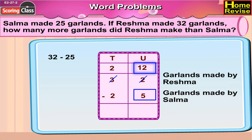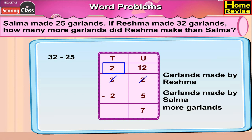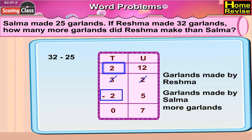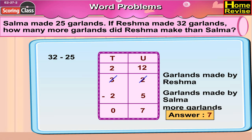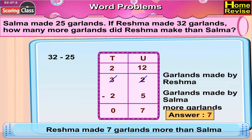Now 12 minus 5 is 7. 2 minus 2 is 0. So it is 7 garlands. Reshma made 7 garlands more than Salma.